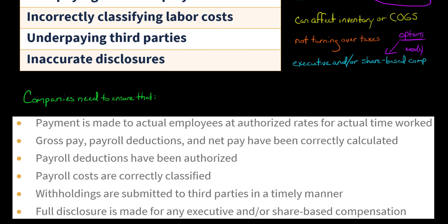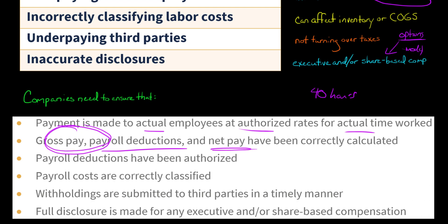So if we're talking about hourly employees saying they worked 40 hours, they should have actually worked 40 hours — actual employees, authorized rates, actual time worked. We also want to make sure that gross pay, payroll deductions — whether for retirement contributions, taxes, or other items — and net pay, which is gross pay after taking out the payroll deductions, have all been correctly calculated.